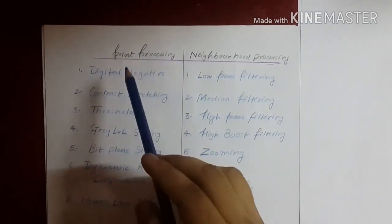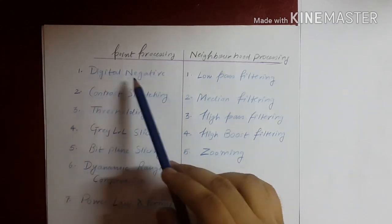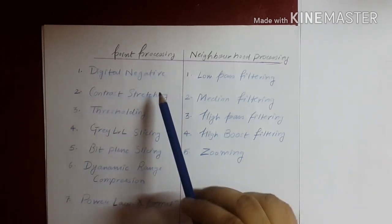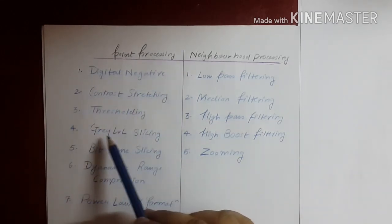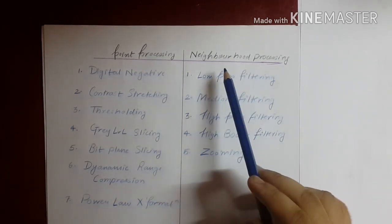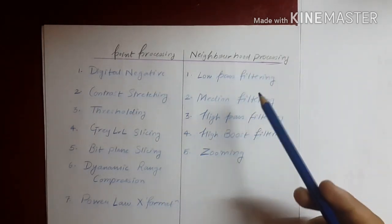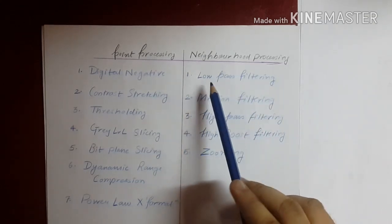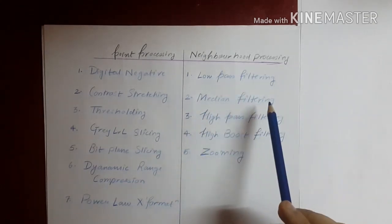For point processing, we have seven different types of processes: digital negative, contrast stretching, thresholding, gray level slicing, bit plane slicing, dynamic range compression, and power law transformation. Whereas in neighborhood processing, we generally have filters such as low pass filtering, median filtering, high pass filtering, high boost filtering.